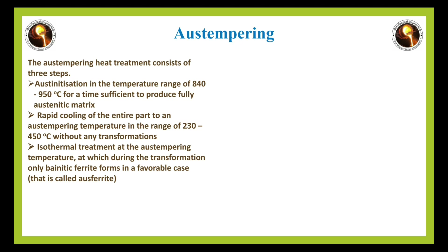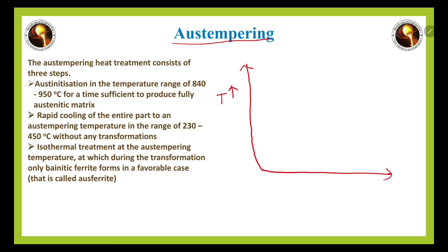Now, what is austempering and martempering? For austempering, we use a TTT diagram — a Time-Temperature-Transformation diagram — with temperature on the y-axis and time on the x-axis. There is a certain critical temperature, and then we have the C-curve, where the first curve is the transformation start curve.